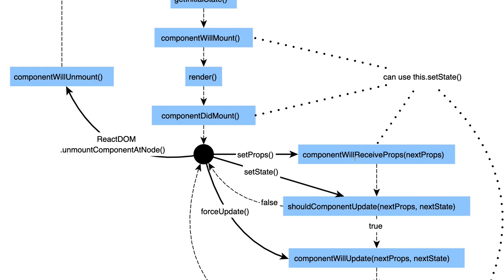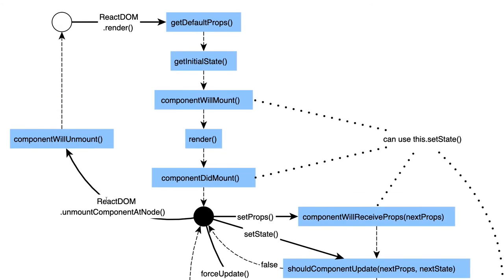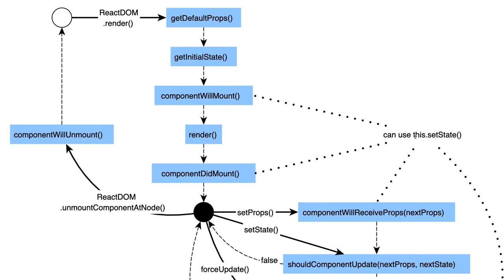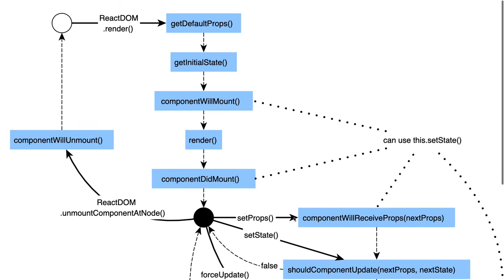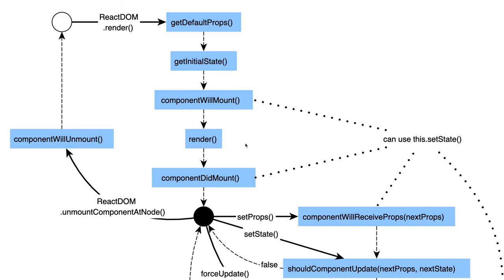If you were receiving x equal to 5 and now started receiving x equal to 10 and wanted to handle that props change, you would use componentWillReceiveProps. To unmount a component from a DOM node, you use componentWillUnmount. In the current version of React, some of these methods are deprecated — you can still use them by adding the 'unsafe' prefix, but it is not recommended.